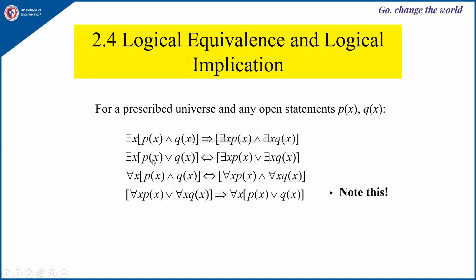Now, ∃x[p(x) ∨ q(x)] is equivalent to ∃x p(x) ∨ ∃x q(x), because each side implies the other when using the OR symbol. But with AND it is only one-way implication. For all x, [p(x) ∧ q(x)] is equivalent to [∀x p(x)] ∧ [∀x q(x)]. When you have the universal quantifier with AND, it is equivalent. However, [∀x p(x)] ∨ [∀x q(x)] only implies ∀x[p(x) ∨ q(x)], not the converse.